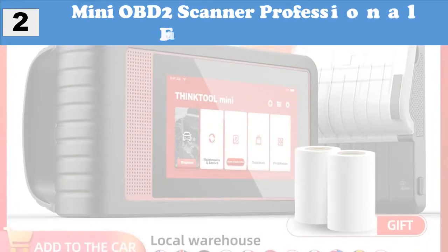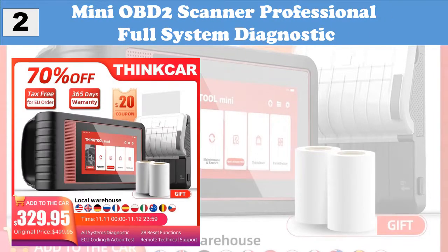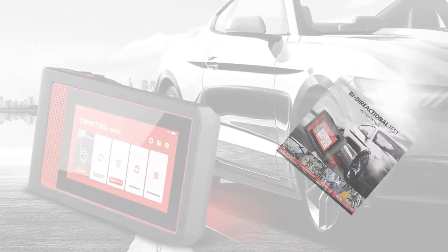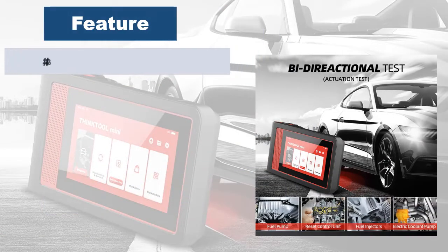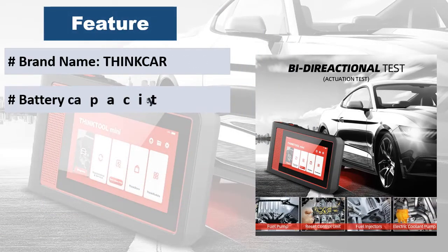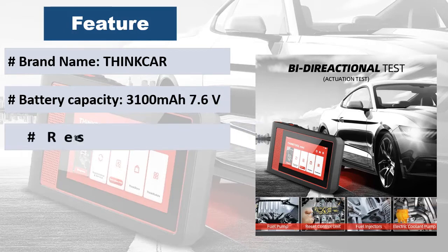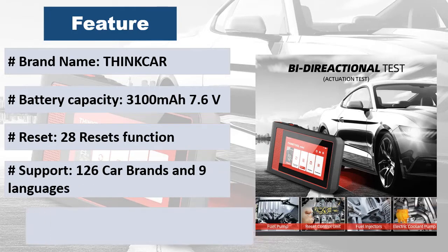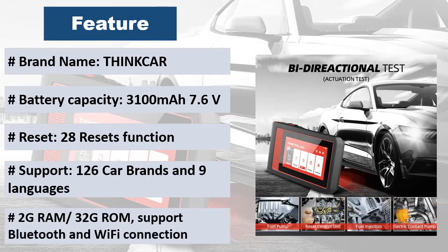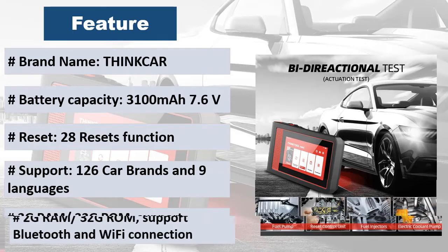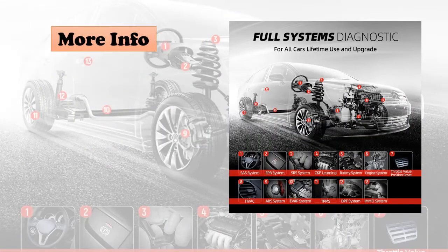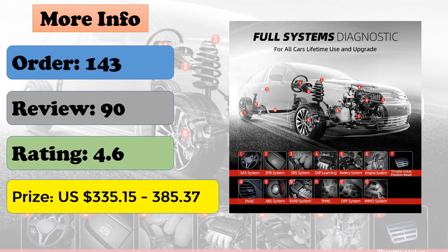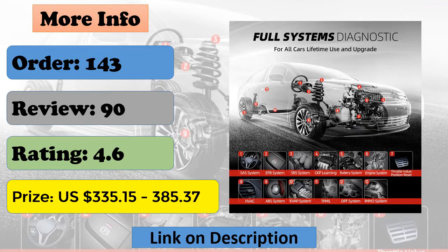At number 2: Mini OBD2 Scanner Professional Full System Diagnostic. Features include code reading, code clearing, data transfer, and upgrade of all models in the whole system. 28 reset functions are free to use, and all cars are free to use and update for life. Supports remote diagnosis service. Runs on Android 10.0 with online upgrade capability. Equipped with VIN code intelligent recognition, and a Thinker series design that is dustproof, shockproof, and easy to store. Has a 5.99-inch display for real-time car diagnostics.